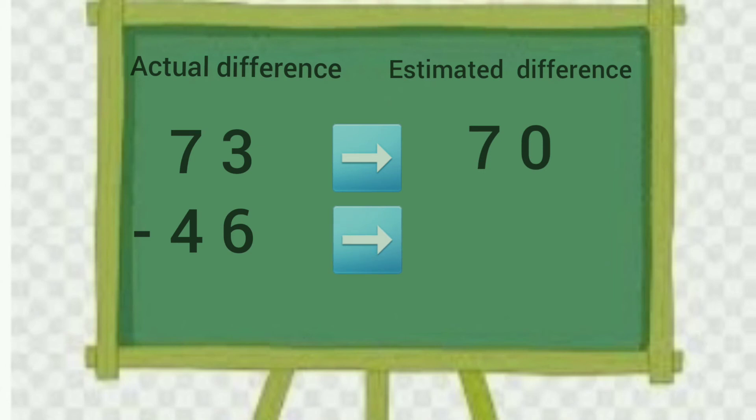Now we will find the difference of 70 and 50. 70 minus 50 will be equal to 20. Now let us find the actual difference of 73 and 46. 73 minus 46 is equal to 27.